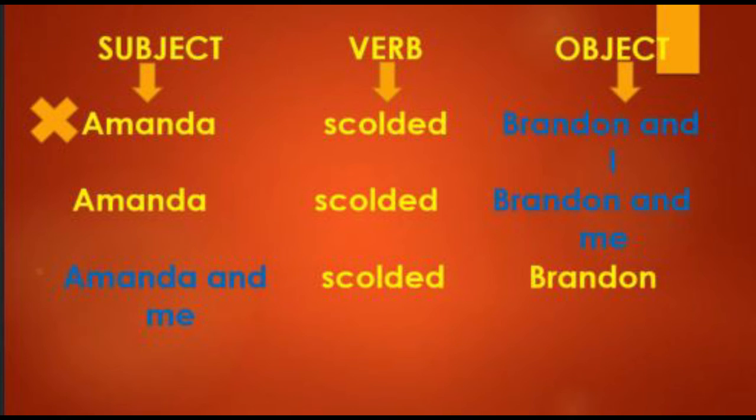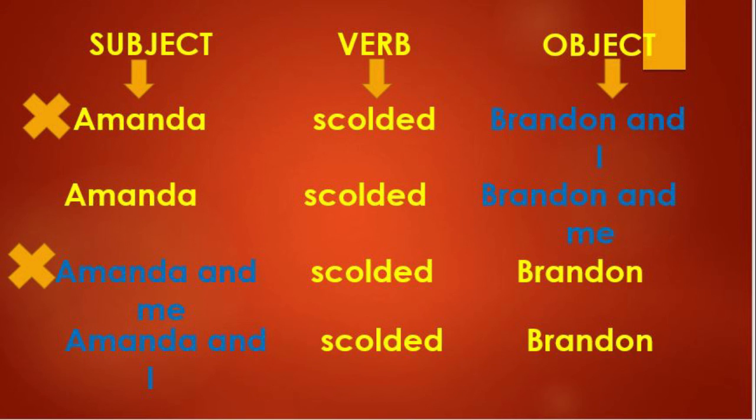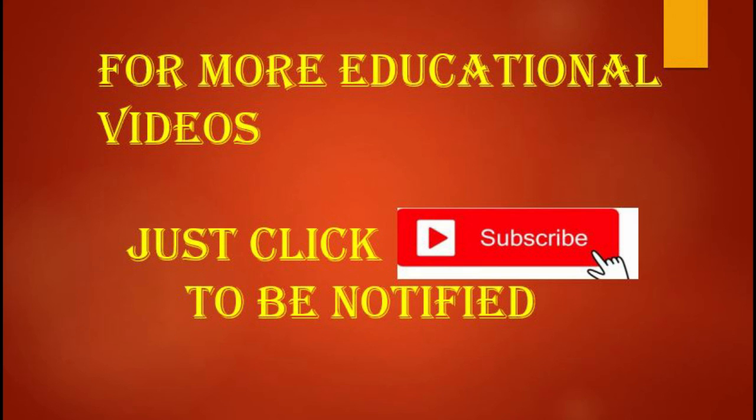Likewise, in the sentence Amanda and me scolded Brandon. Me should not be used under subject. So this sentence is incorrect. The correct sentence for this is Amanda and I scolded Brandon.